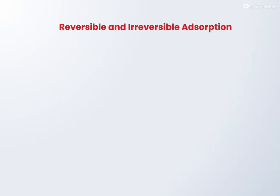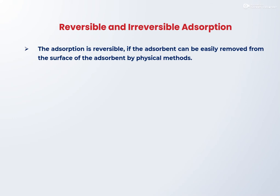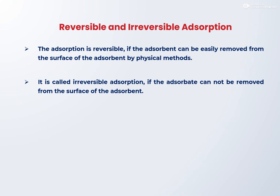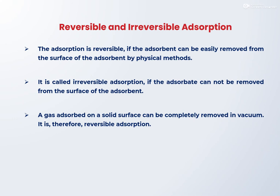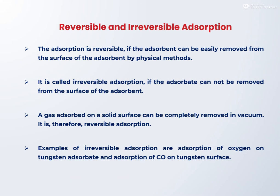Adsorption is a rapid process and equilibrium is attained in a short time, whereas in absorption the equilibrium takes place slowly. Adsorption is reversible when the adsorbate can be easily removed from the surface of the adsorbent by a physical method. It is called irreversible adsorption if the adsorbate cannot be removed from the surface. For example, a gas adsorbed on a solid surface can be completely removed in vacuum — that is reversible adsorption. Examples of irreversible adsorption are adsorption of oxygen and carbon monoxide on a tungsten surface.